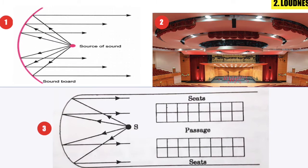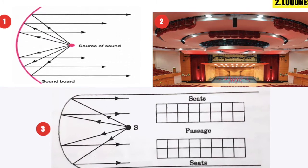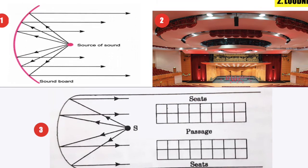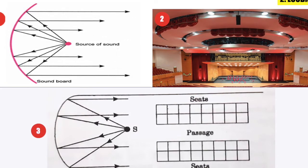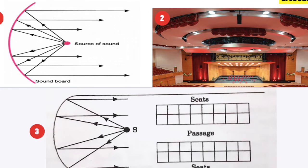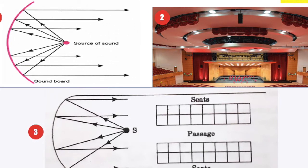Two: large polished wooden reflecting surfaces above the speaker are also helpful. Three: all at the speaker's end should be given a parabolic shape. This ensures uniform sound intensity in every part of the hall.